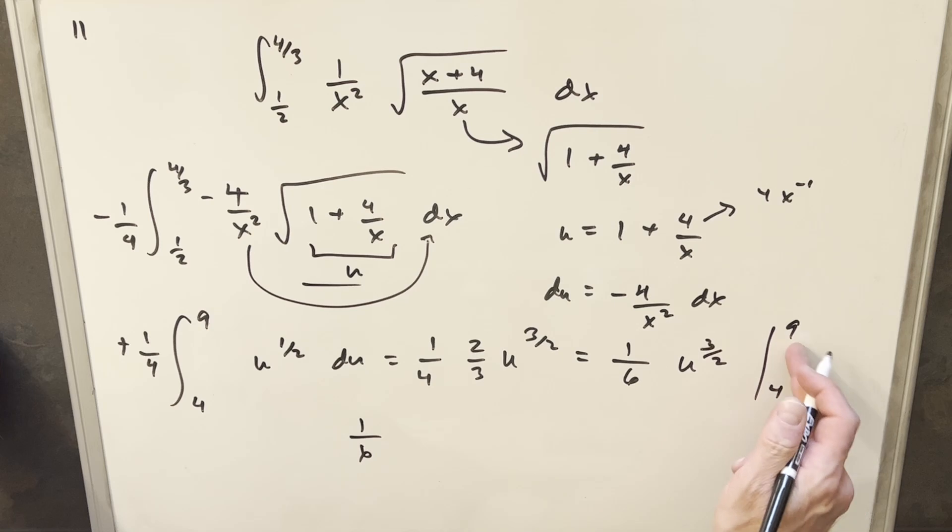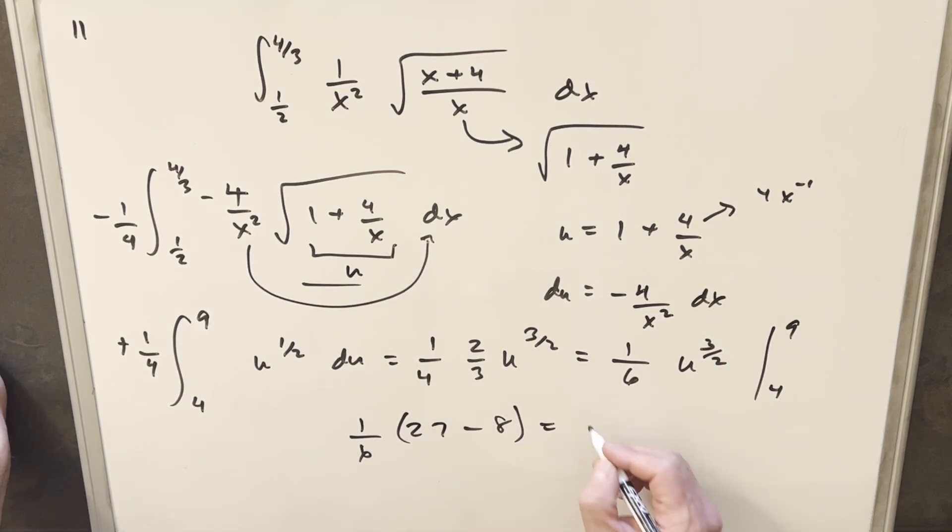Okay, so let's just evaluate. So plugging a 9 in, what I'll do is take a square root of 9, which is 3 to the 3rd is going to be 27. And then we'll plug our 4 in, square root of 4 is 2, to the 3rd is going to be 8. Then just to finish off, 27 minus 8 is 19 over 6.